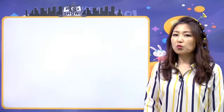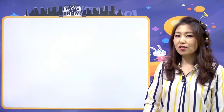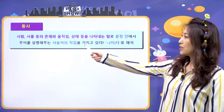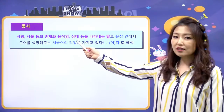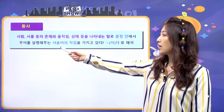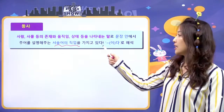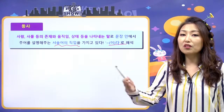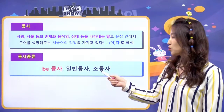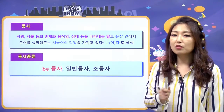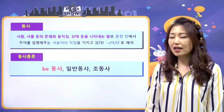Quick Review! 동사란 사람, 사물, 동물 등의 존재나 움직임, 상태를 나타내는 말이고, 문장 안에서는 주어를 설명해주는 서술어의 직업을 갖고 있다. 해석은 '이다'로 해석되는데 과거는 '이었다', '였다'로 해석된다. 동사의 종류는 비동사, 일반 동사, 조동사가 있고, 그중에 일반 동사는 비동사와 조동사를 제외한 나머지 모든 동사다.